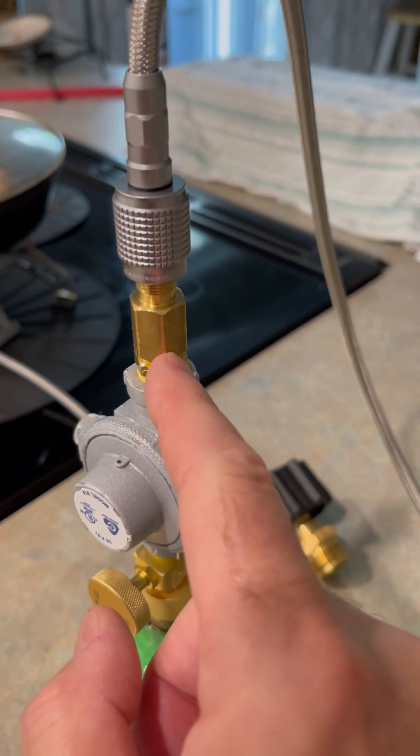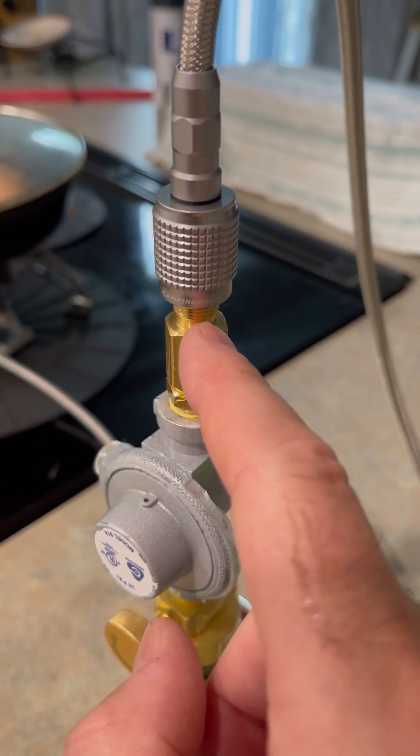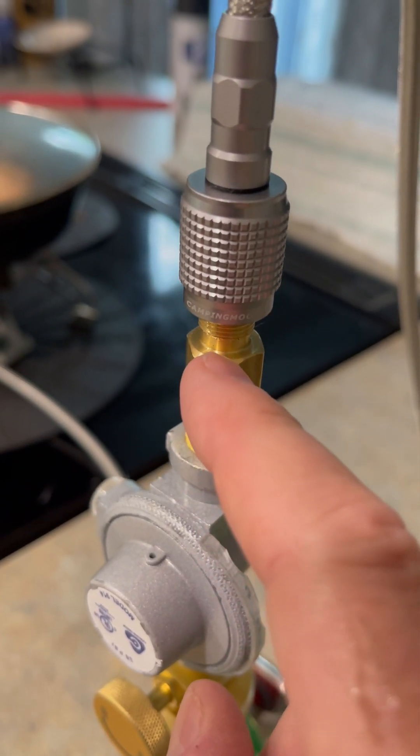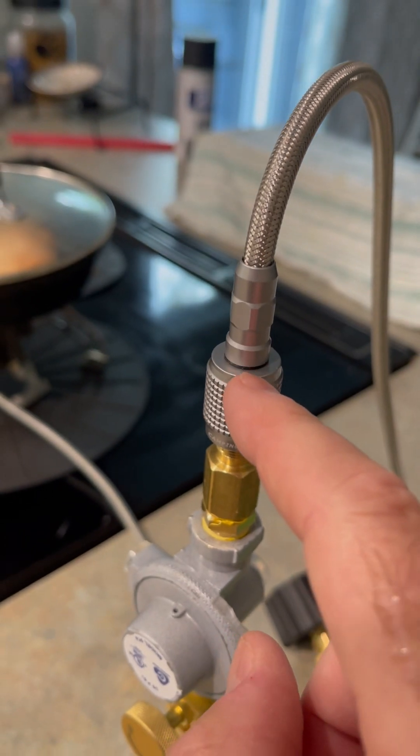That right there is my high-pressure regulator that goes up to the UNEF lindel valve type connector, which eventually will connect into the stove up above. That's the hose for the stove.